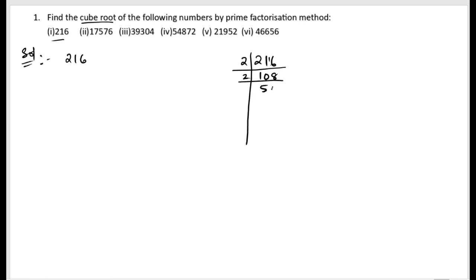Continuing the prime factorization by dividing by 2 and then by 3. So we got three twos: 2 into 2 into 2, and three threes: 3 into 3 into 3.